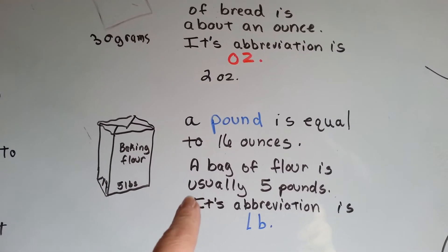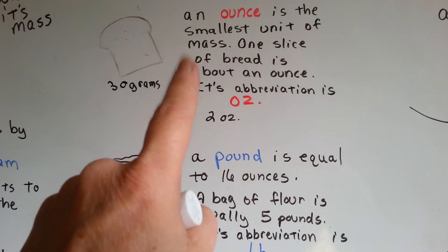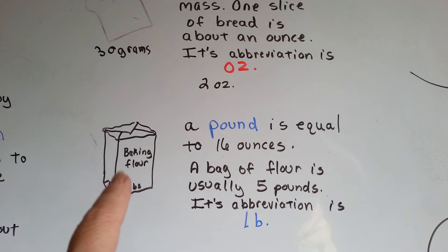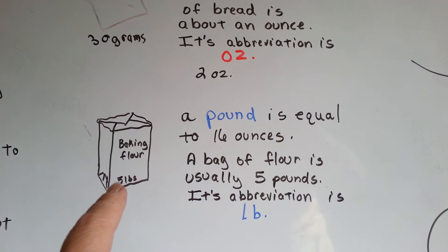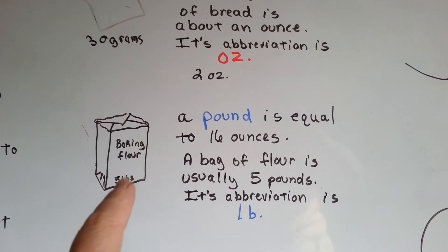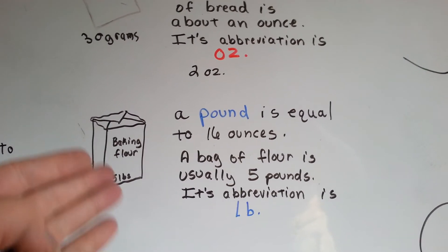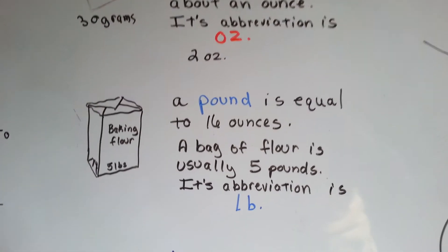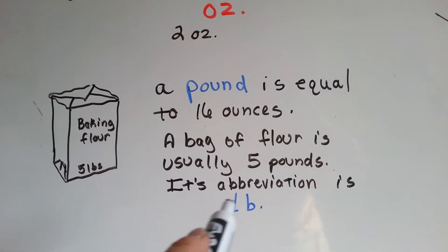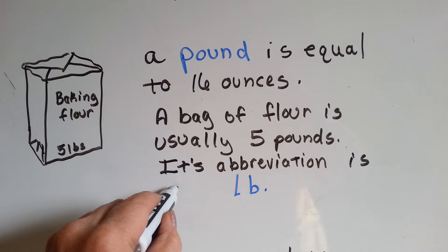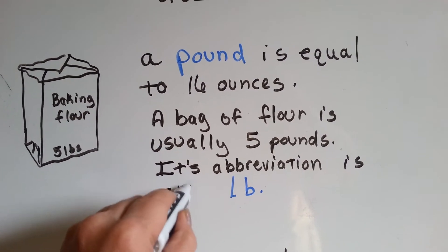A pound is equal to 16 ounces. A bag of flour from the store is usually about five pounds. That will give you an idea of how heavy a pound is. Five pounds is a sack of baking flour. The abbreviation for pound is LB. Isn't that funny? So five pounds is 5LB.